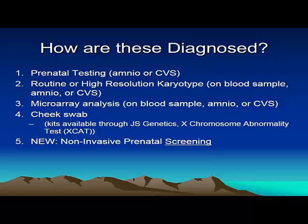So how are these variations diagnosed? Typically it's through a routine or high-resolution karyotype, with cells obtained either from blood or prenatally by amniocentesis or CVS. A microarray analysis can also be conducted — it's a much more detailed analysis of the chromosome, costs several thousand dollars, and is usually indicated in complex situations. We can also make the diagnosis from a cheek swab. Our center collaborates with a company called JS Genetics, which has a kit that looks at the X and Y chromosomes. And there's a new test that came out in late 2012 called a non-invasive prenatal screening test, which I'll review.